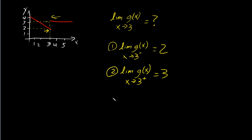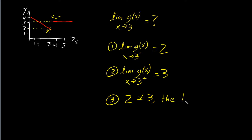The third thing we have to check: are these two values equal? If they are equal, that's the limit value. If they're not equal, the limit does not exist. Since we see that 2 does not equal 3, the limit does not exist.